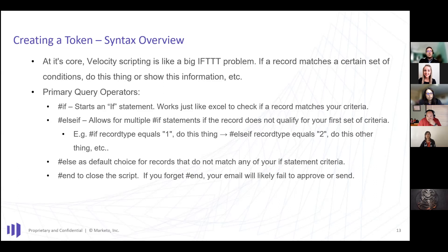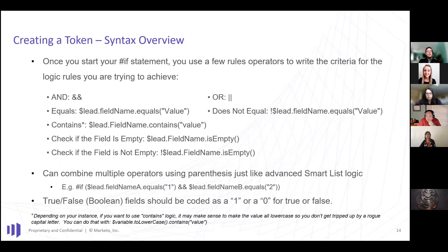At the bottom you have '#else' — what's the default if someone fails every if statement before it? And then you end the script with '#end'. Don't forget your end tag, because you'll get really weird error messages when trying to approve or send a test email. So the structure is: if this, if not do this, if not do this, for everybody else do this thing, then end. That's how you structure one of these things.